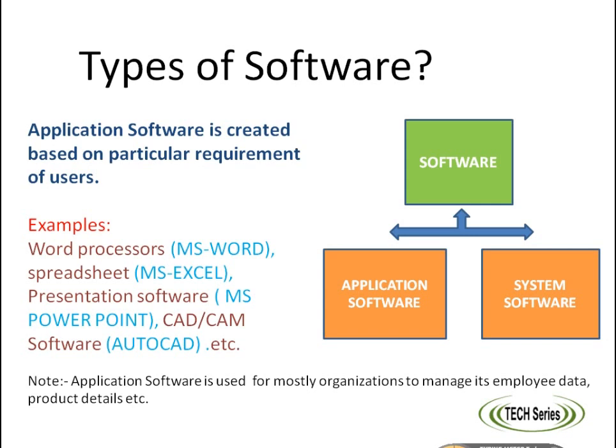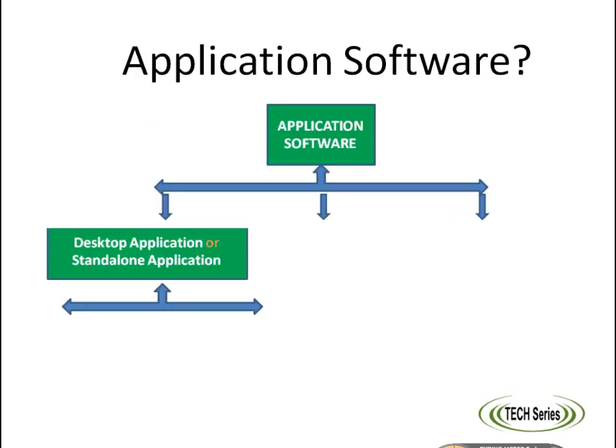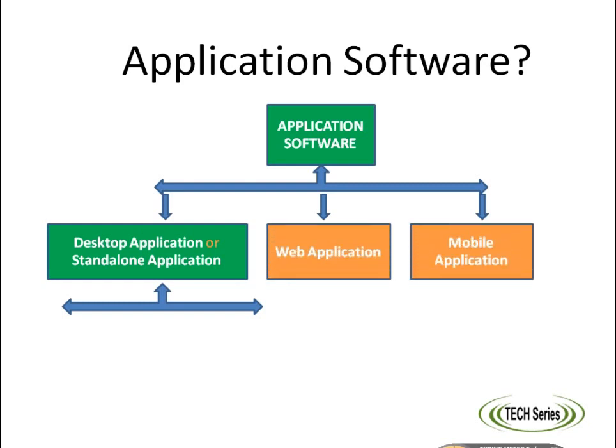Application software is further categorized into three sections: desktop application or standalone application, web application, and mobile application.